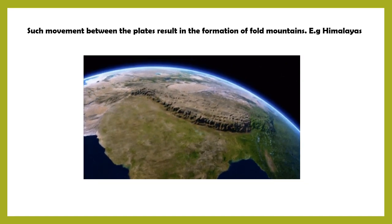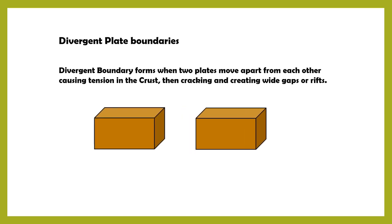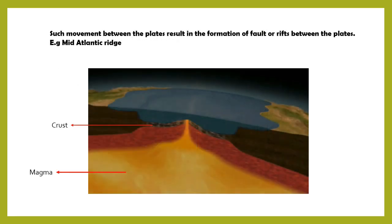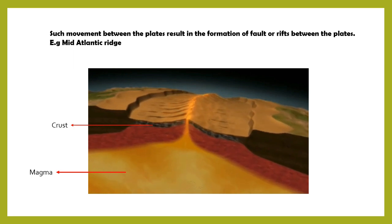The next type is divergent plate boundaries, when two plates move away from each other. This causes tension in the crust, then cracking and creating wide gaps or rifts — called divergent plate boundaries. Such movement between the plates results in the formation of faults or rifts. For example, the mid-Atlantic ridges.